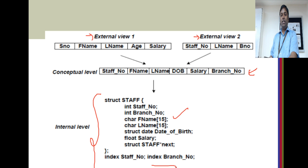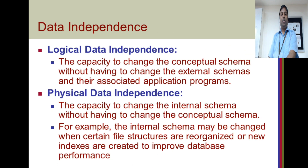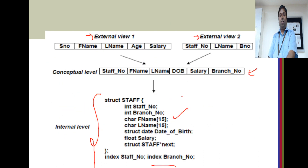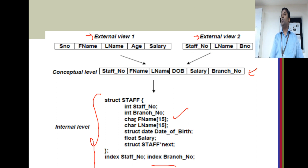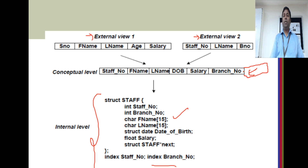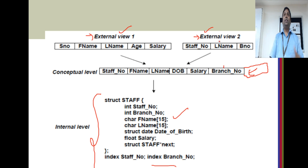There are two more important terms: logical data independence and physical data independence. What is logical data independence? If I go and create the conceptual schema, and then add a column due to business demands, that doesn't mean I must go and change my views. If it is needed I should change them, but there is no mandatory requirement that if I change the conceptual schema, I have to change the external views. That is logical data independence.